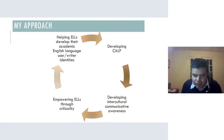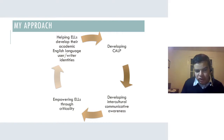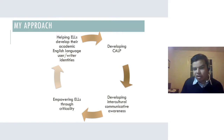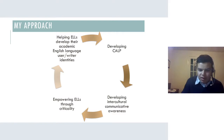So this is my approach. As I mentioned, I do identity research. I am helping my English language learners develop their academic English language user and writer identities. I'm doing this by helping them develop their cognitive and academic language proficiency, their intercultural communicative awareness, and by empowering them through criticality. I'll give you some examples of how I approach this, but first I'll briefly introduce the main conceptual lenses informing this approach.